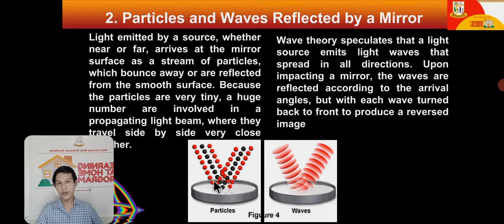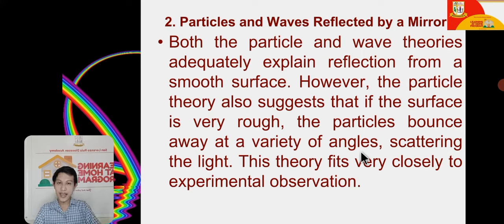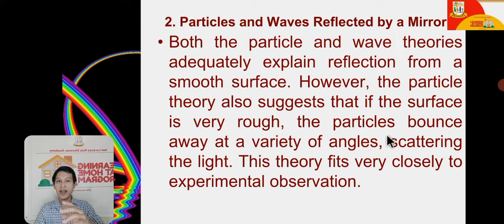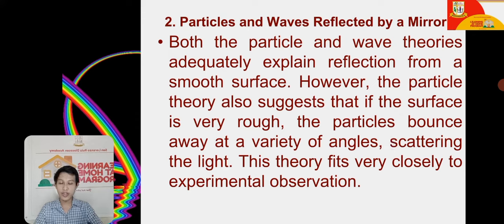So both theories have a similar idea — the light hits a mirror and reflects in another direction. However, particle theory became more acceptable here because it could also explain rough surfaces: when particles hit a rough surface, they reflect at a variety of angles, producing different directions. Unlike wave theory, which describes a single direction for the wave. For example, when looking into water that is not still, the image of your face appears distorted — changing in direction — which the particle theory explains better.